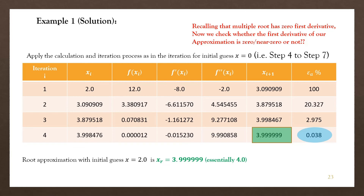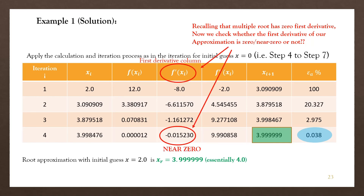Recalling that a multiple root must have a zero or near-zero first derivative, we look at the first derivative column in the final iteration. The first derivative value is near zero, so we conclude that the root x equal to 4 is a multiple root. That is how we calculate and determine a multiple root using the modified Newton-Raphson method.